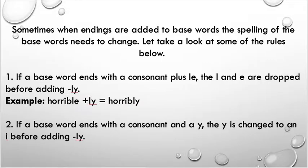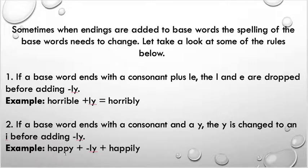The second rule for adding '-ly' is: if a base word ends with a consonant and a 'y,' the 'y' is changed to an 'i' before adding the '-ly.' For example, 'happy' ends with a consonant 'p' and a 'y.' So if I'm going to add the suffix '-ly,' I need to change my 'y' to an 'i' and then add '-ly.' As you can see, 'happily' — I've changed my 'y' to an 'i' and added '-ly.'